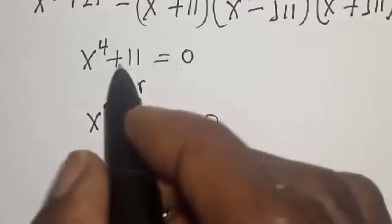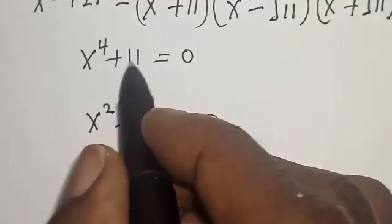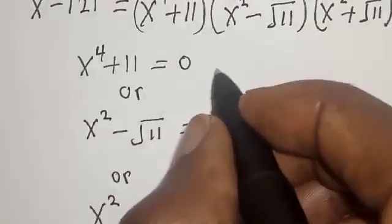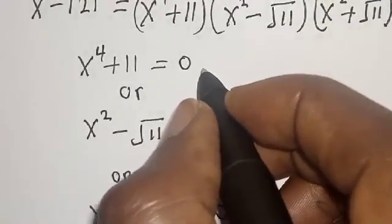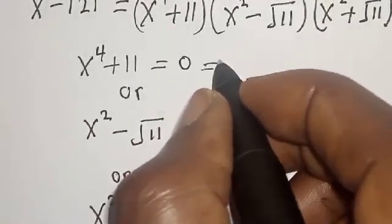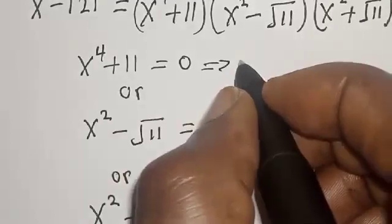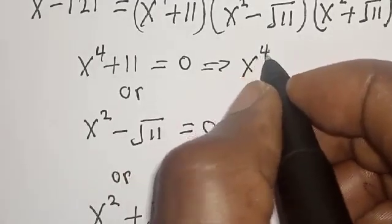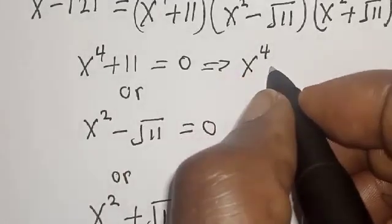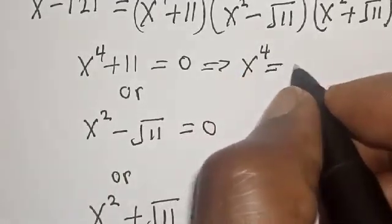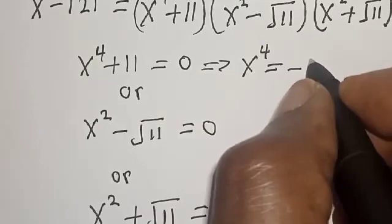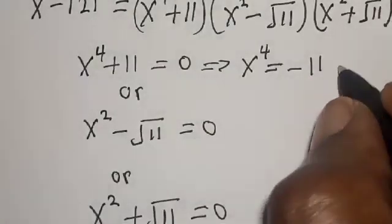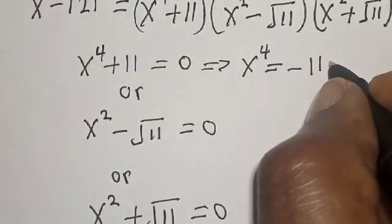From case one, x raised to the power 4 plus 11 equals zero. This implies that x raised to the power 4 is equal to minus 11. We reject this.